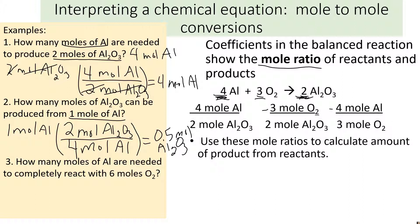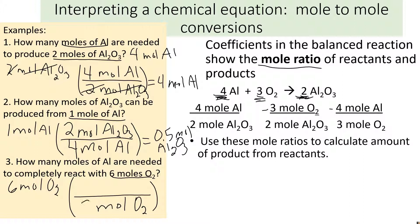The last one — try it on your own first. How many moles of aluminum are needed to completely react with six moles of oxygen? The six moles of oxygen is our given. Our conversion: we want moles of oxygen on the bottom with a coefficient of three, and our find is moles of aluminum with a coefficient of four. The moles of oxygen cancel, the six and the three reduce, and this turns out to be eight moles of aluminum.